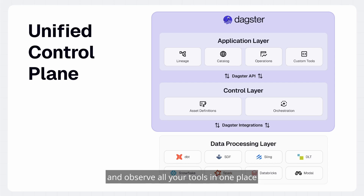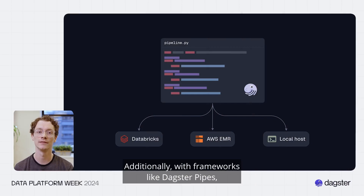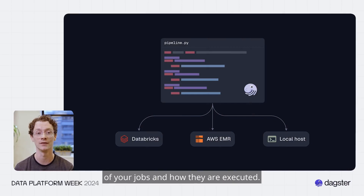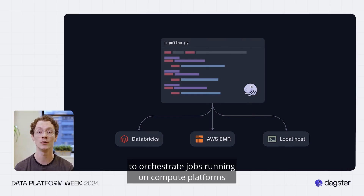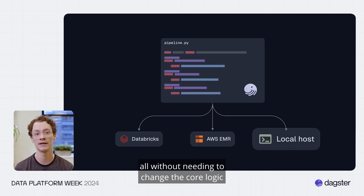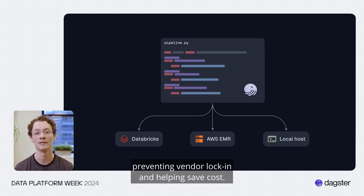By being able to orchestrate and observe all your tools in one place through Daxter's asset lineage, cataloging, and insights, it becomes much easier to understand the flow of data in your organization. With frameworks like Daxter Pipes, you have a separation between the business logic of your jobs and how they are executed. In the example of Spark, this means you can orchestrate jobs on Databricks, AWS EMR, or local execution, all without changing the core logic of your jobs — preventing vendor lock-in and helping save cost.